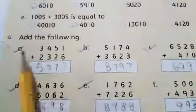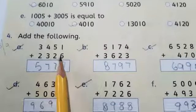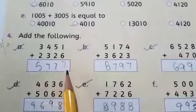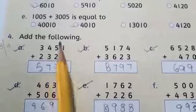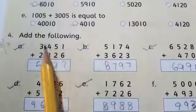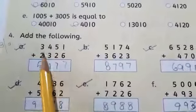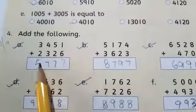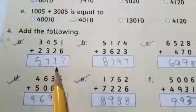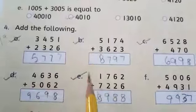So part a is 3451 plus 2326. Now add them together: 6 plus 1 is 7, 5 plus 2, what comes after 5? 6, 7. What comes after 4? 5, 6, 7. Then 3 plus 2, what comes after 3? 4, 5. So answer is 5777. Now you have to complete part b, c, d, and e.